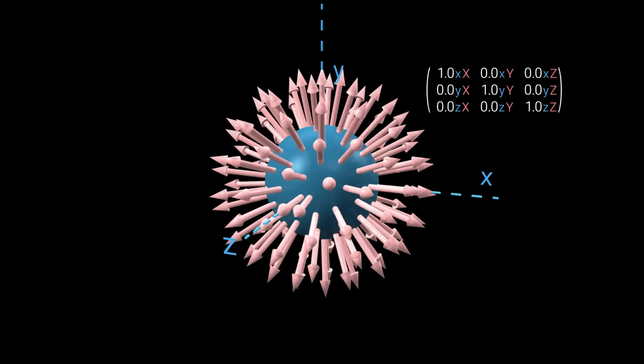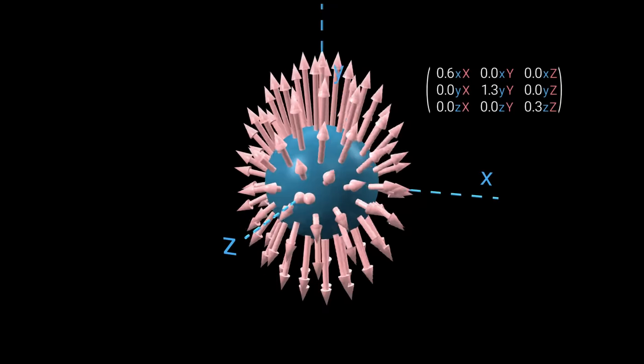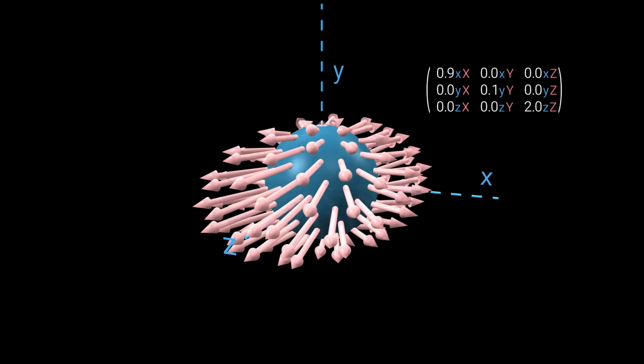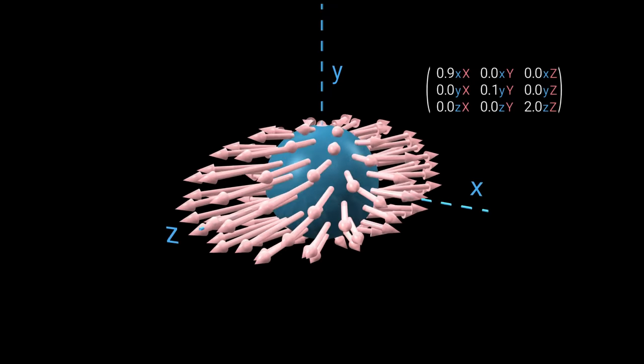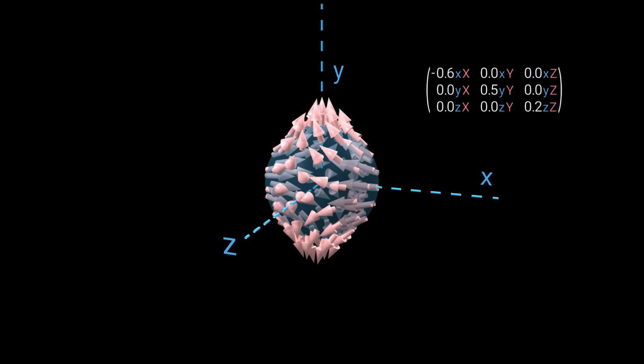Each component of the diagonal controls the size of the bulge along one axis. And we can also have negative bulges.